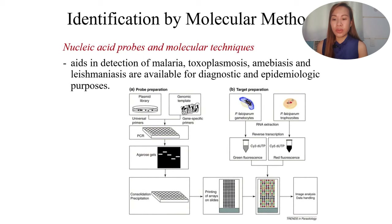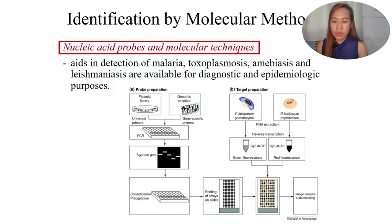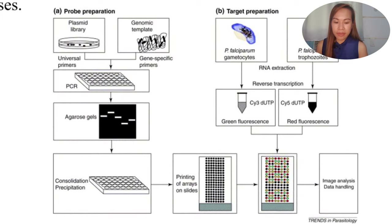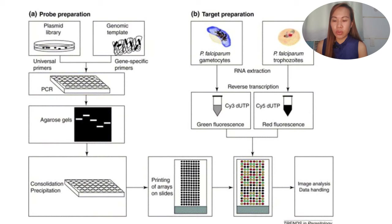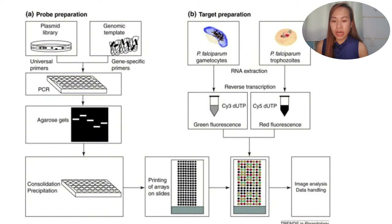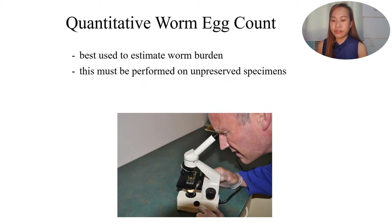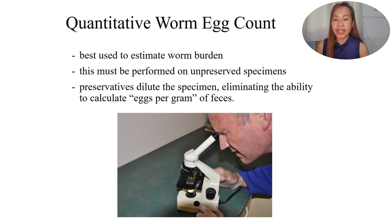Quantitative worm egg count is best used to estimate worm burden and must be performed on a fresh — not preserved — specimen, as preservatives dilute the specimen and eliminate the ability to calculate eggs per gram of feces. In vitro cultivation of parasites is primarily used for blood and tissue protozoa. Its benefits include providing a model for studying host-parasite interaction, sourcing immunomodulatory molecules, in vitro testing of new drugs against schistosomiasis, and serving as an alternative to animal experiments.